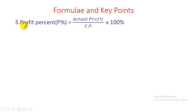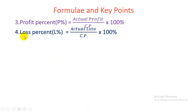Profit percent (P%) = actual profit divided by CP, multiplied by 100%. Loss percent (L%) = actual loss divided by CP, multiplied by 100%.